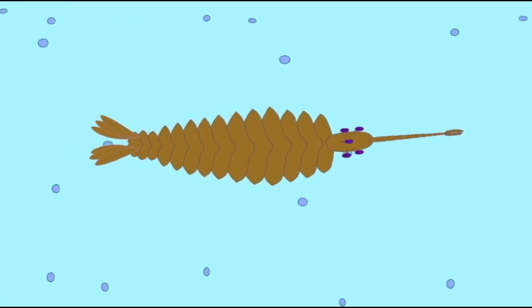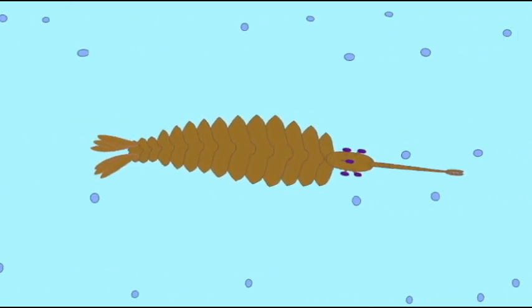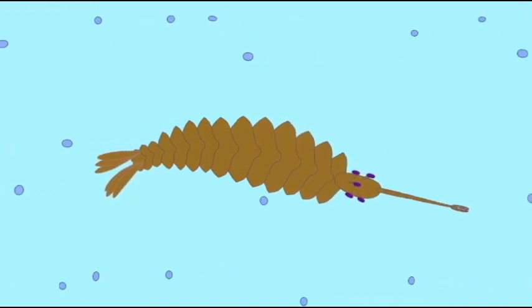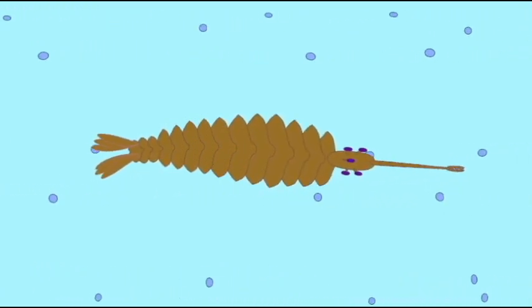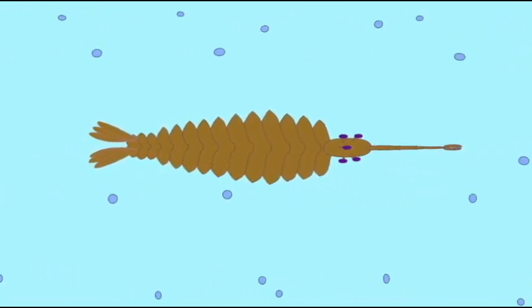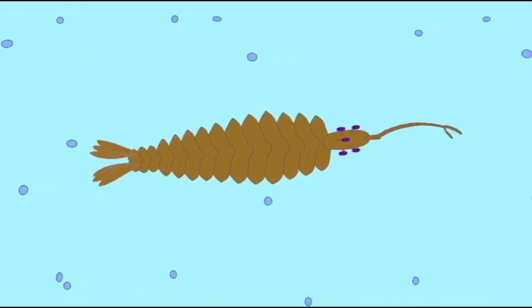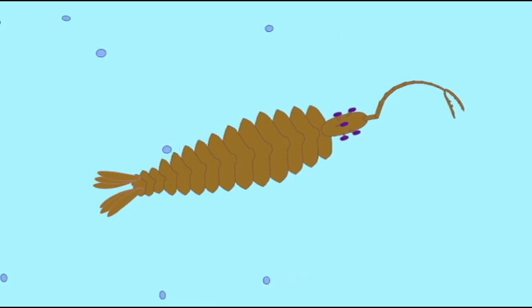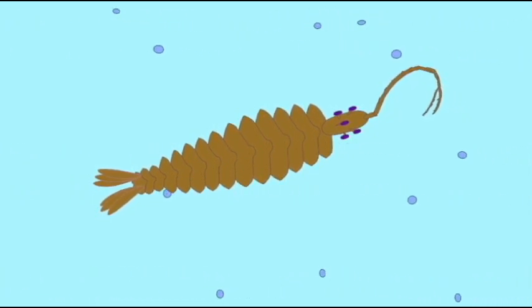Opabinia is another animal which was not an arthropod but probably closely related. It is interesting in that it had five eyes, very unusual, and a long proboscis probably used for feeding, which measured about a third the length of the body. There has been some debate as to whether or not legs were present.